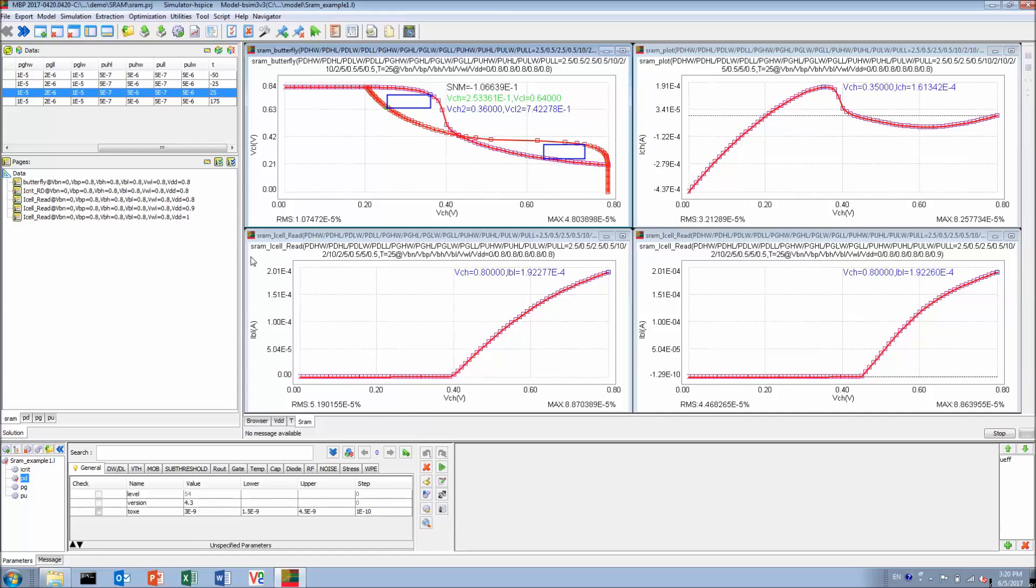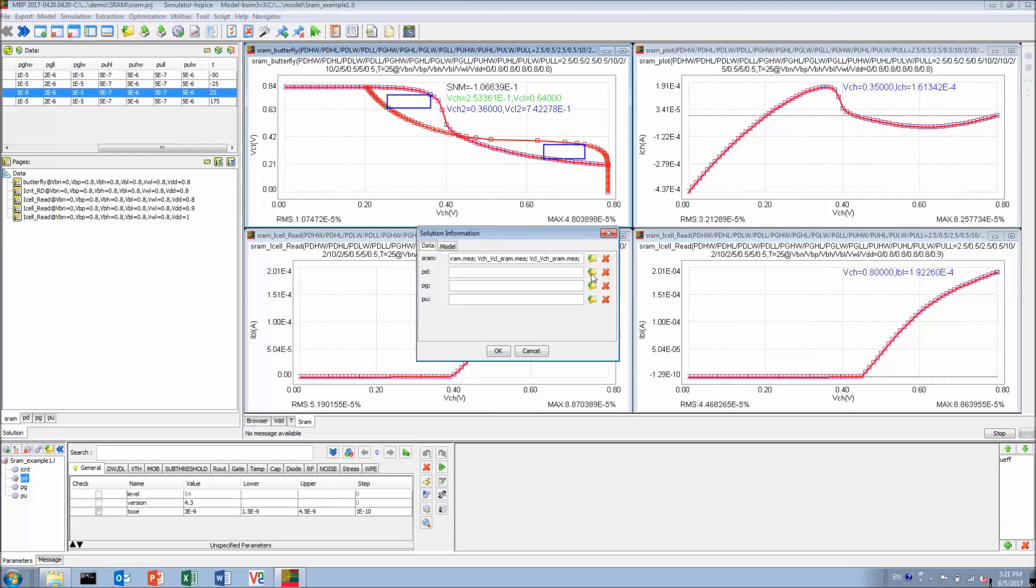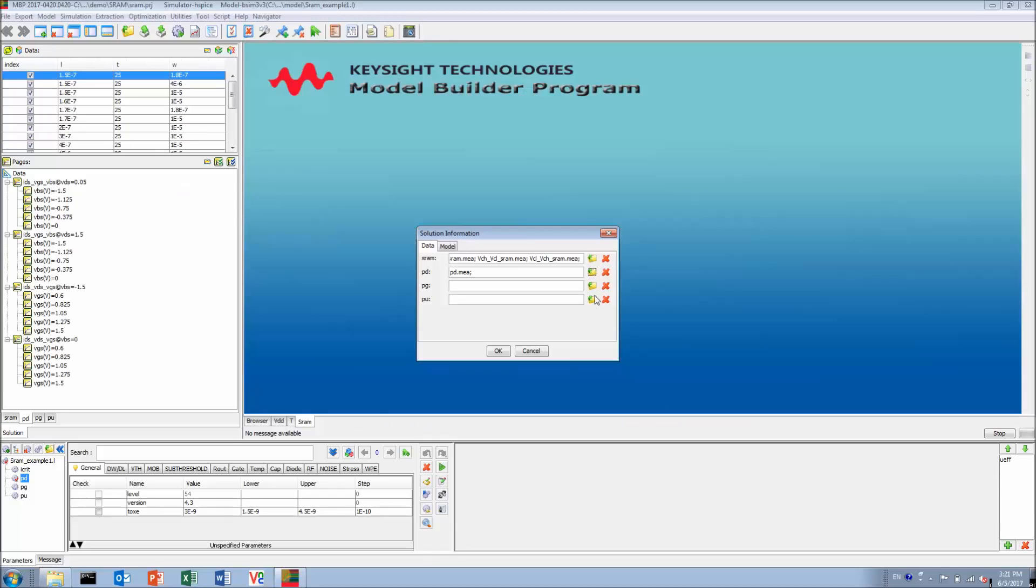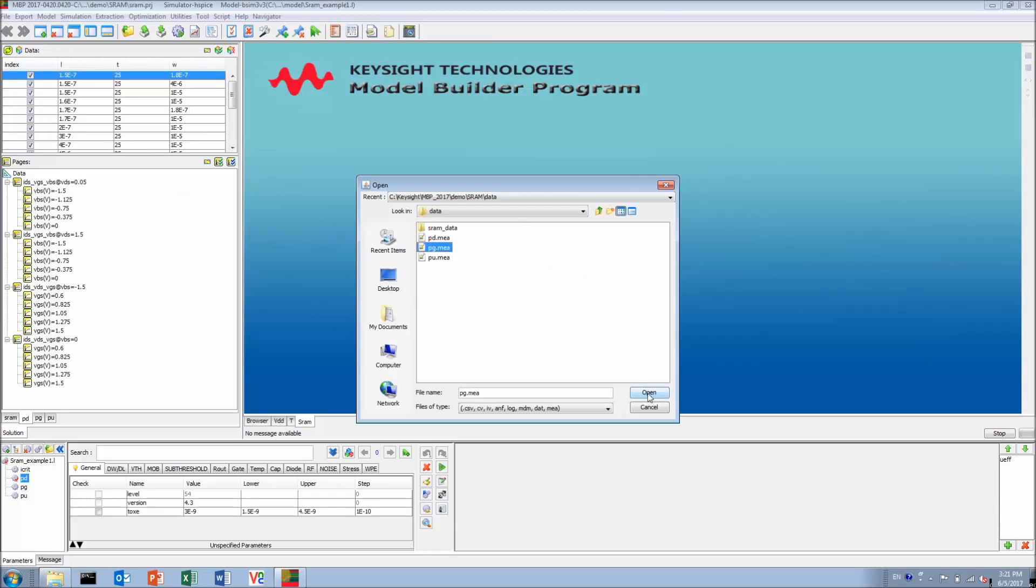Next, let's load some measurement data for pull up, pass gate, and pull down transistors. After we pick up all the data files one by one, we shall see the data populated in MBP GUI shown as individual tabs.